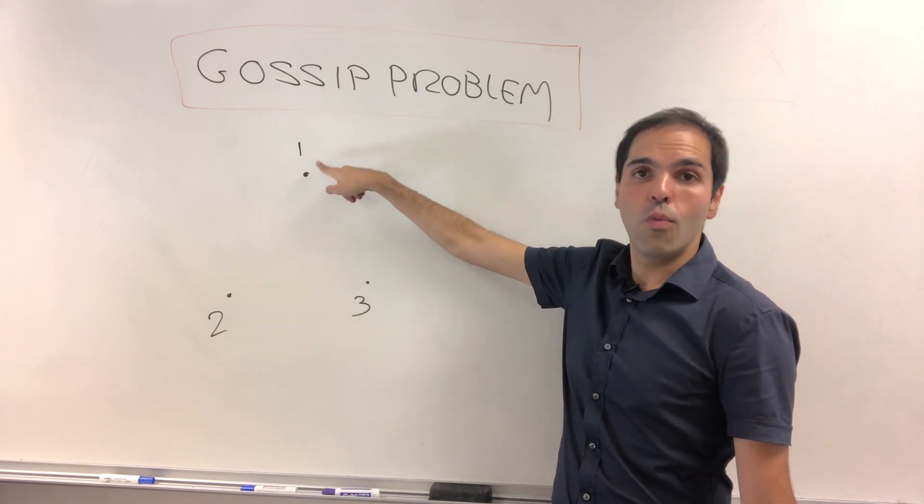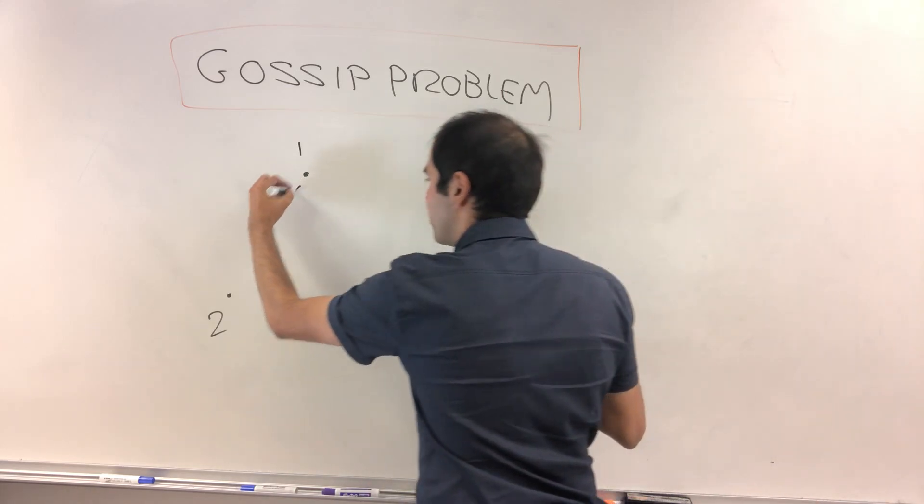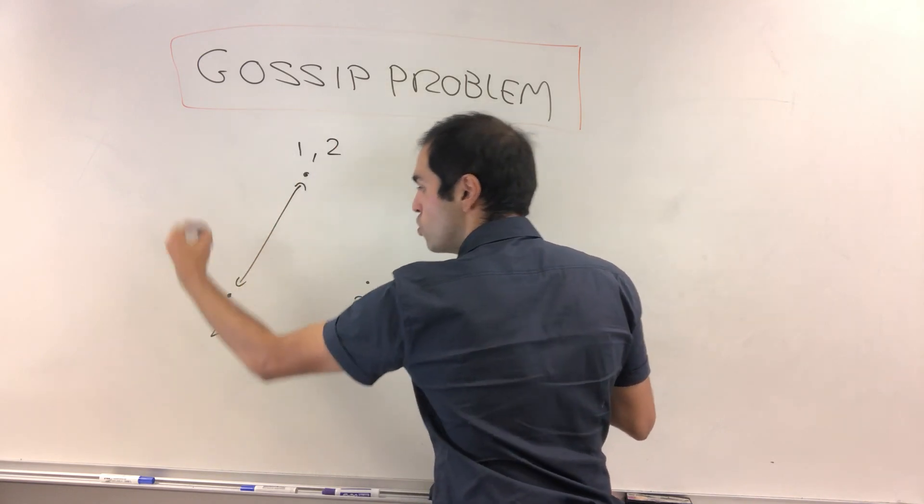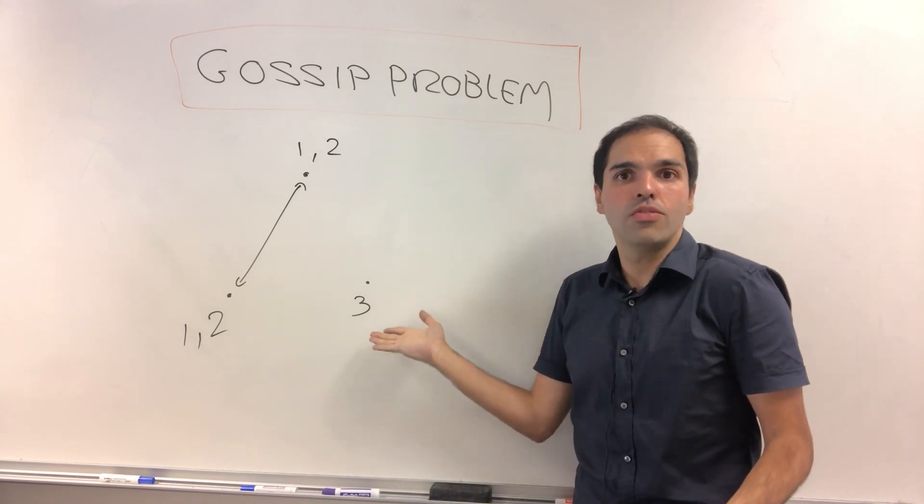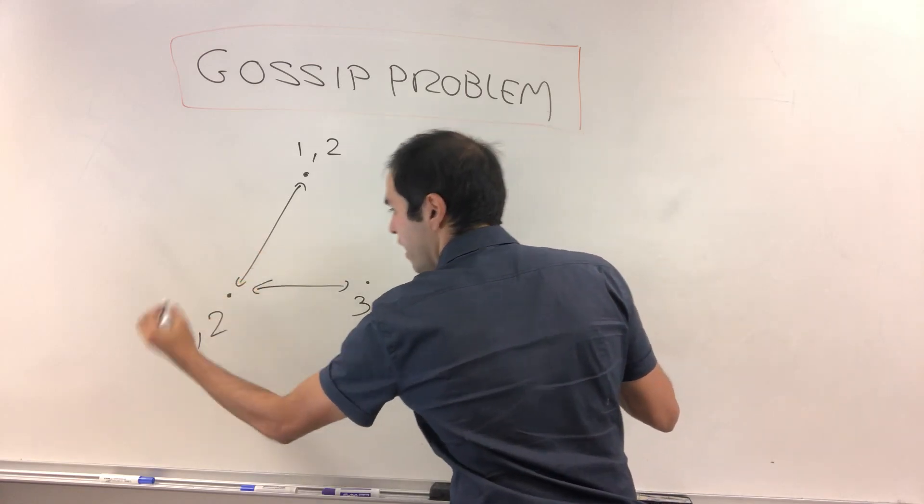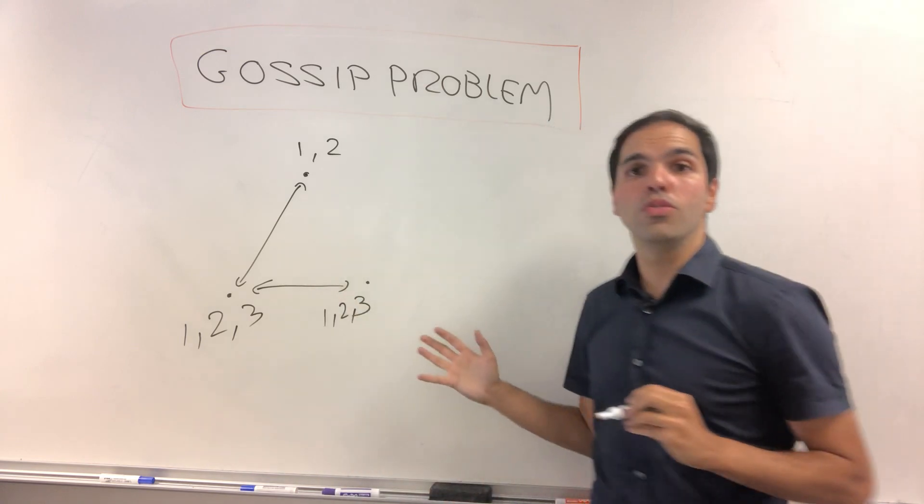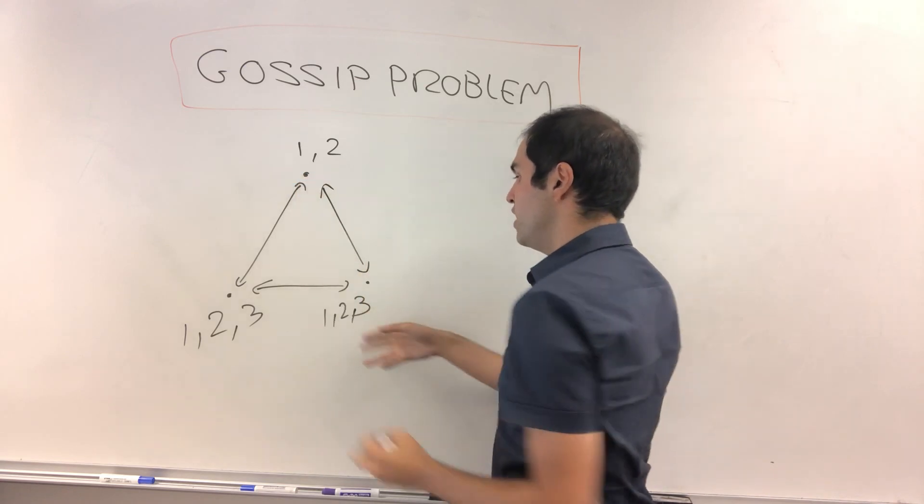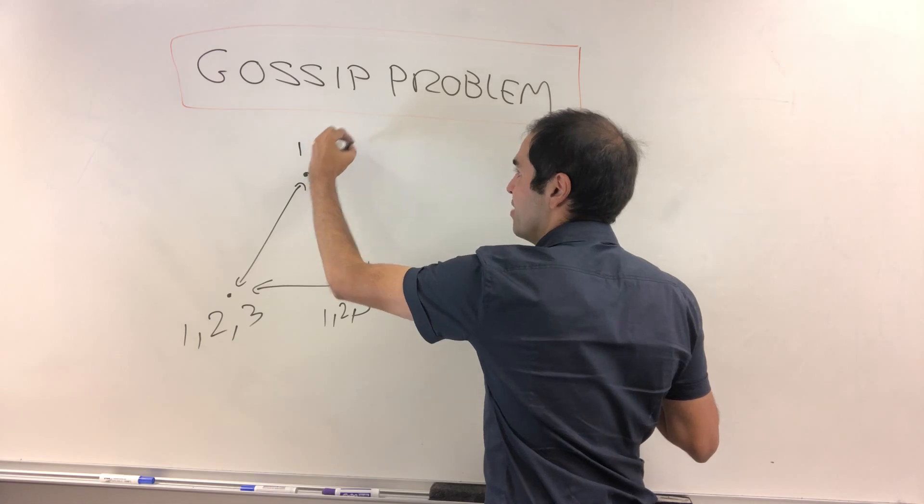For instance here, one has to call someone to tell their gossip. So let's say one calls two, then at the end, one knows two's gossip and two knows one's gossip. And then someone has to call three to share their gossip. Let's say two calls three, then two knows all the gossips one, two, three, but also three knows all the gossips because they exchanged. And finally, three knows one's gossip and vice versa.